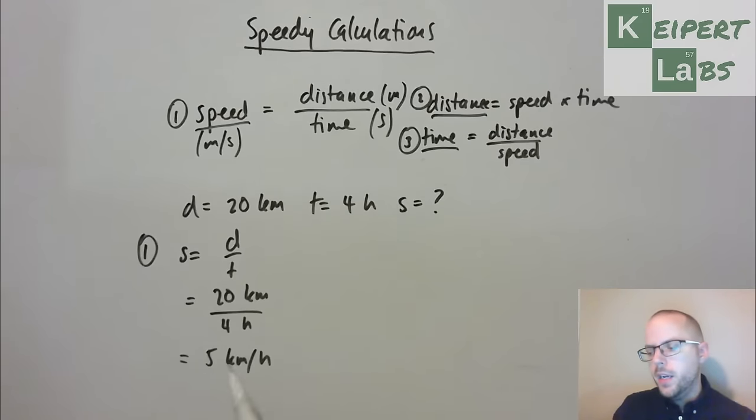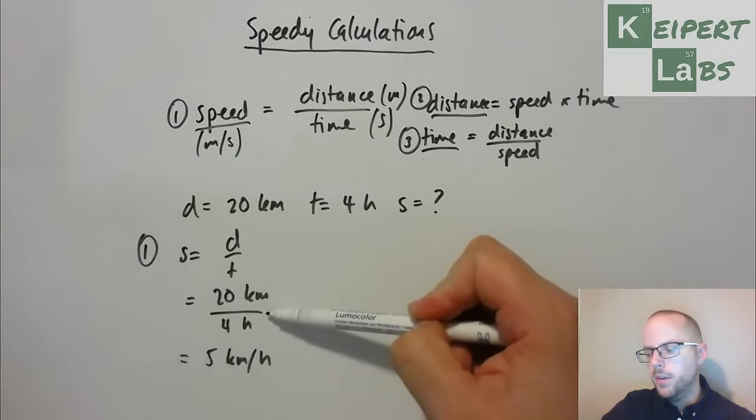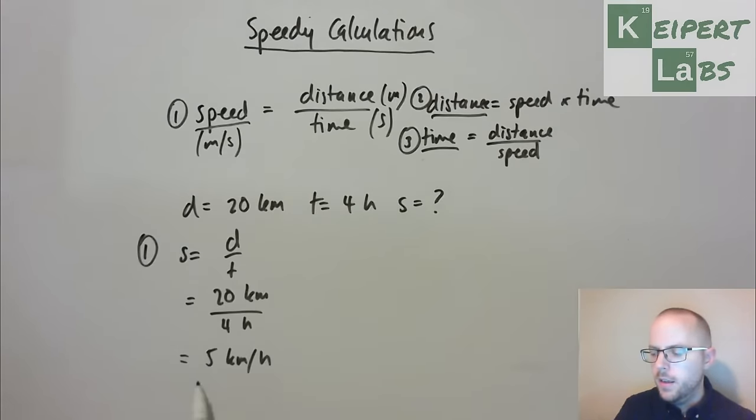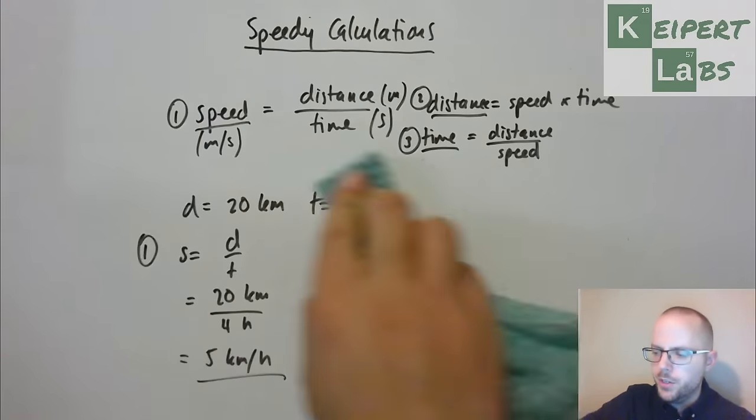But so we identified the formula, we substituted the values in that we were given and then we did the calculation and we end up with an answer and there we go. So now let's look at kind of the last question we're going to do here of this idea of looking at Usain Bolt.